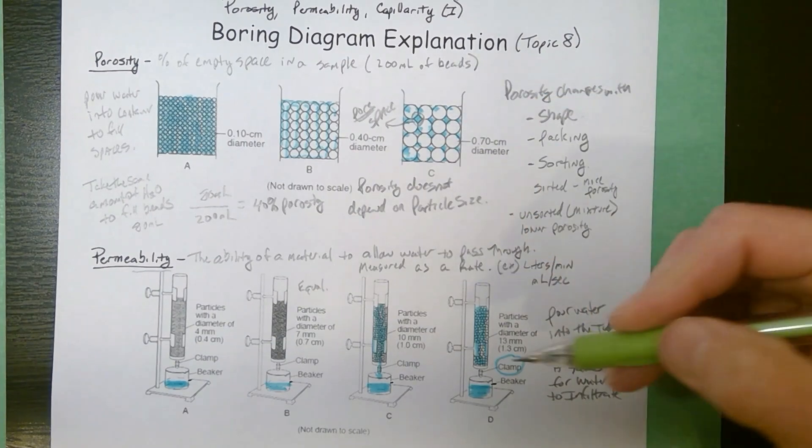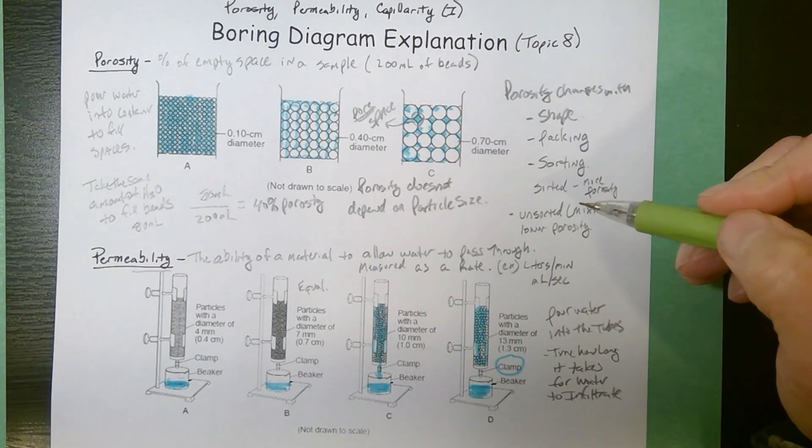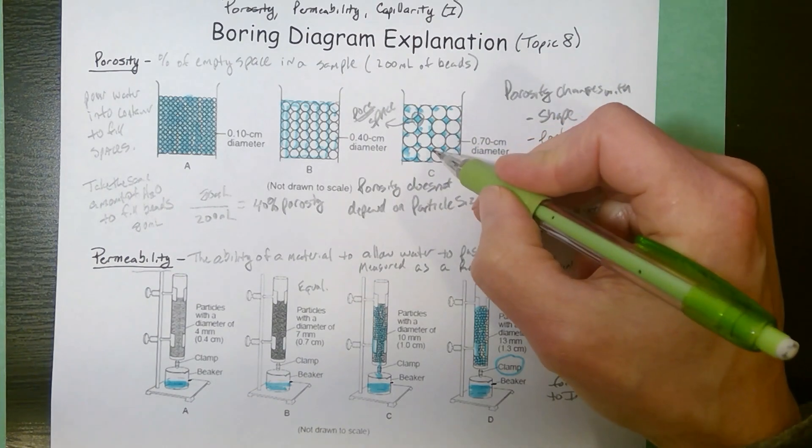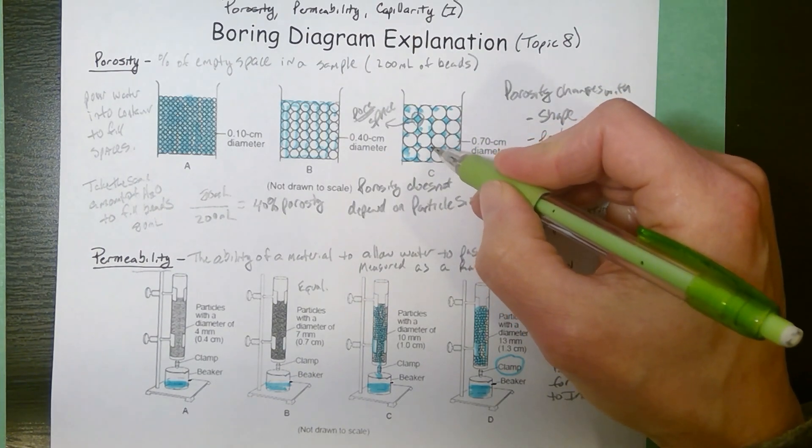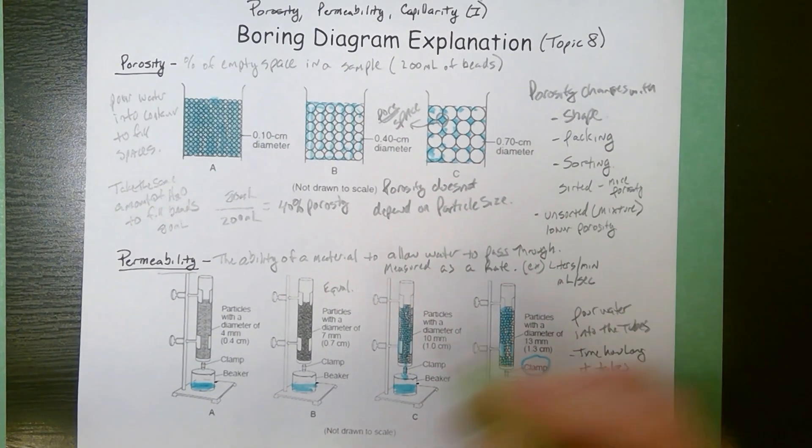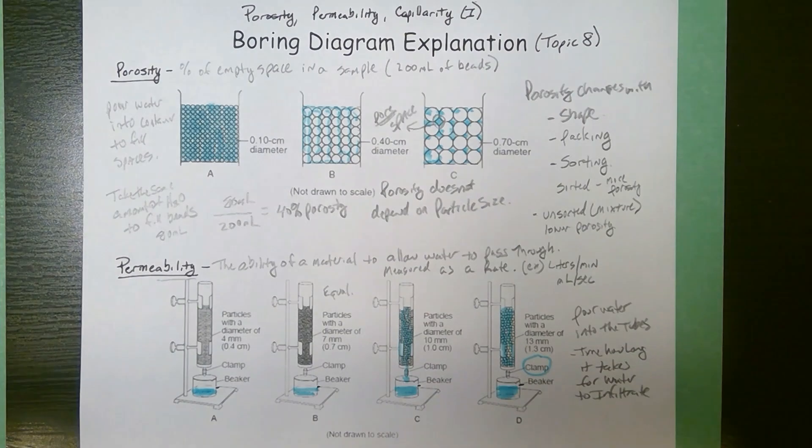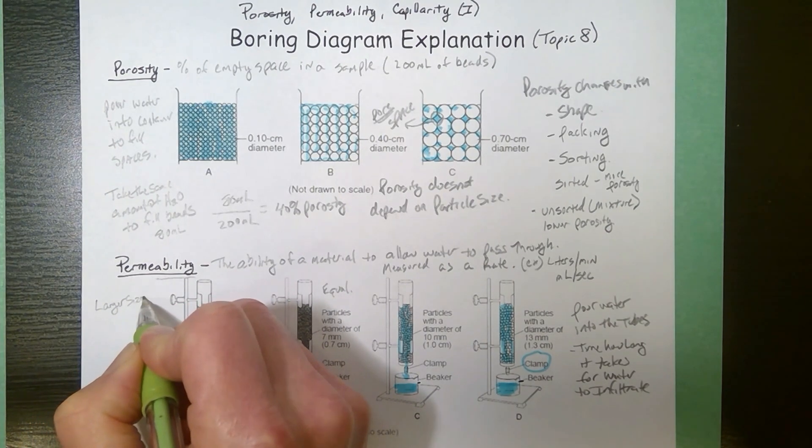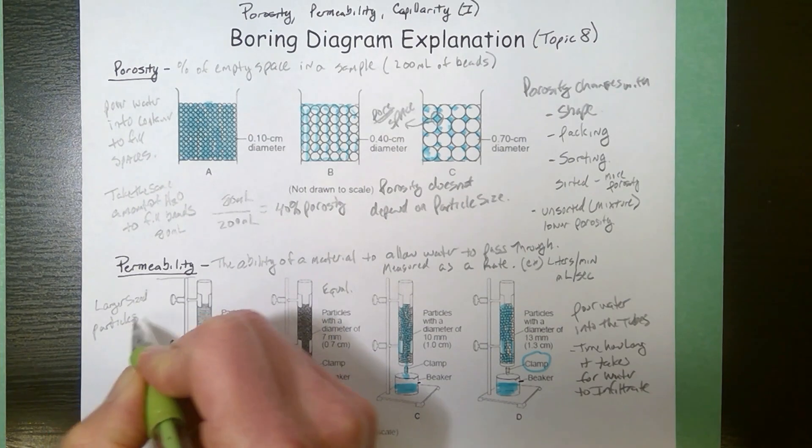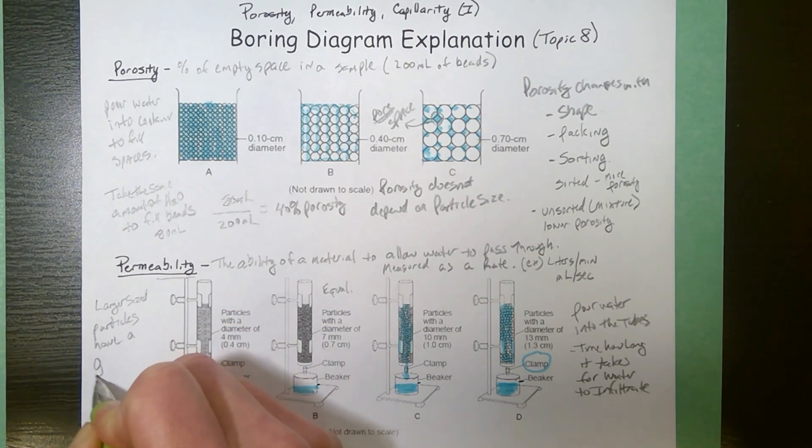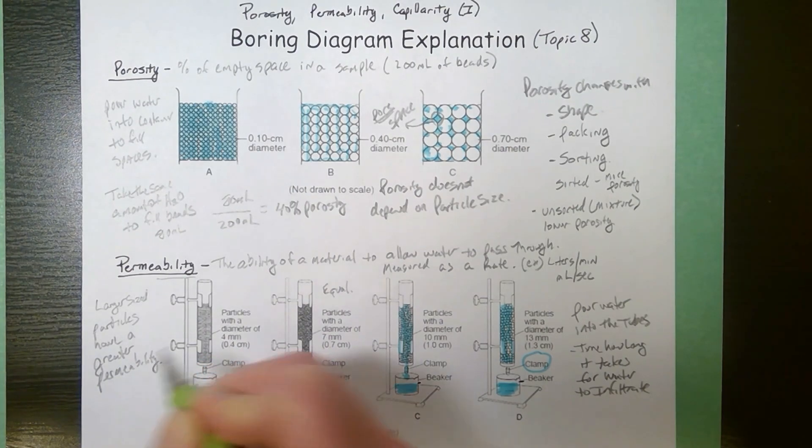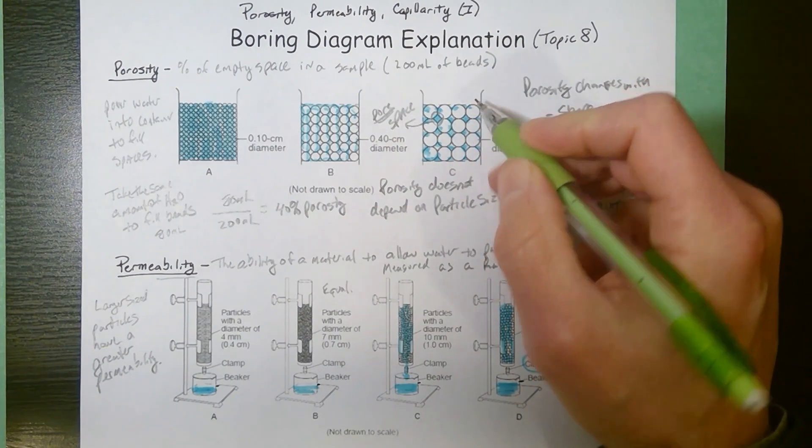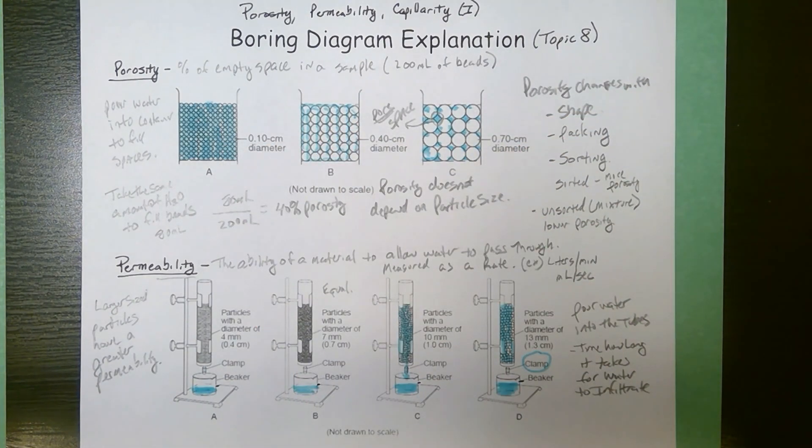Now looking at the diagrams above, it's pretty easy to see which one it would be easier to pass through. When there are nice large holes, more water is able to pass through faster. So what we observe when we look at permeability, porosity does not depend on size, but when we're dealing with permeability, larger sized particles have a greater permeability. It's just easier to fit through fewer large spaces than a ton of smaller tiny little spaces.